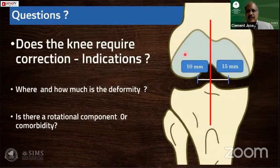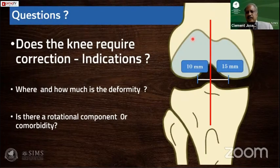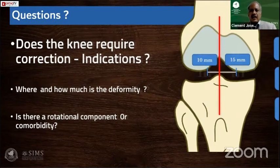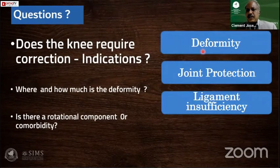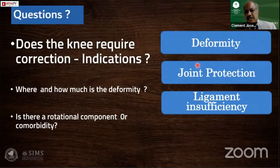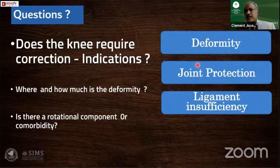Before undertaking an osteotomy, you have to answer three questions. First: does the knee require correction, and what are your indications? If you draw the weight-bearing line and it goes 10 mm towards the lateral side, it is considered a significant mechanical axis deviation. The indication is typically cosmetically unacceptable and functionally compromising deformity. More and more we are offering distal femoral osteotomies for joint protection whenever there is lateral joint osteoarthritis, or when doing a restorative procedure like cartilage repair, meniscus repair, or meniscus transplant on the lateral compartment.